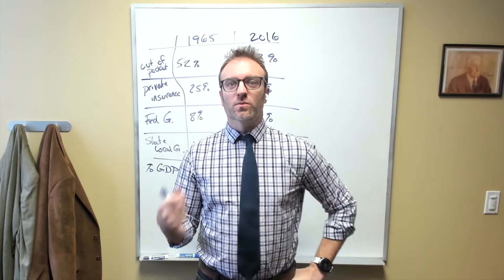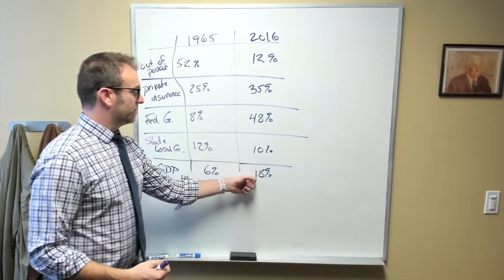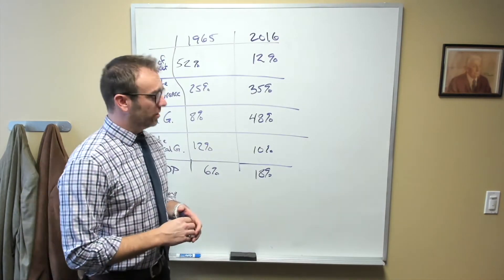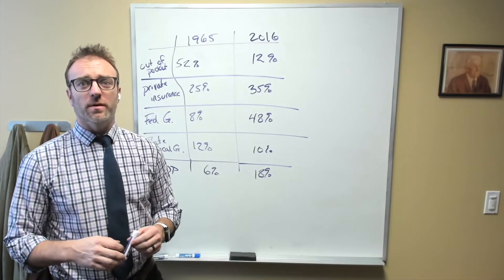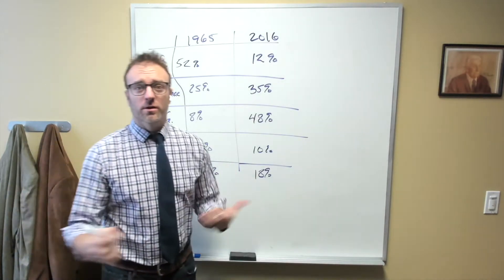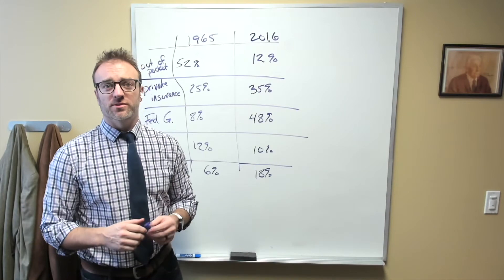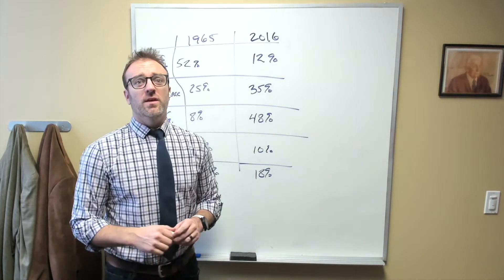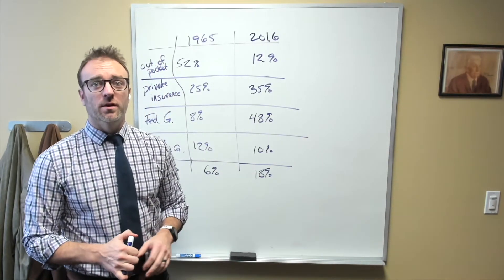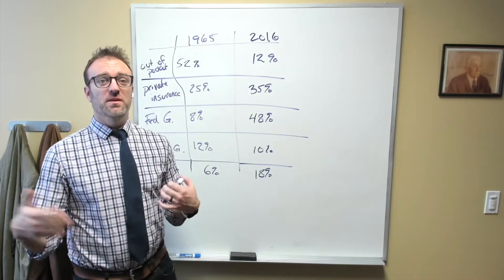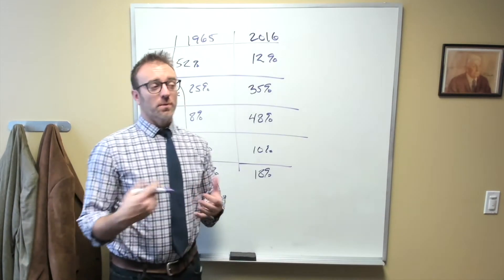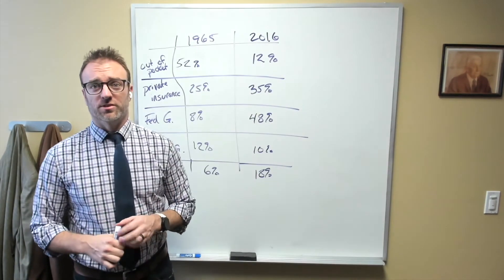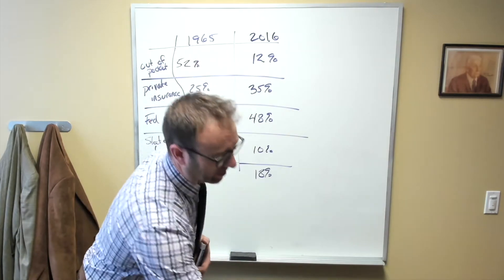What we want to think about is what might cause greater expenses or greater expenditures on health care. One answer that we could explore, and it might be true, is that Americans are just on average sicker than we used to be. So in what ways might we be sicker? Well, for one, obesity and obesity-related complications remain the top killer in this country, again pre-COVID, and obesity rates are on the rise. This means that other things constant, the average person in 2016 will likely require more medical care than the average person in 1965, just by virtue of increasing obesity rates.